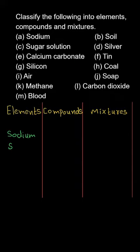Next is calcium carbonate. Now calcium carbonate is a compound as it will form a homogeneous mixture and will be chemically mixed with each other. So it will come under compounds. Next is tin. Now tin is again an element, it is made up of one type of atoms.